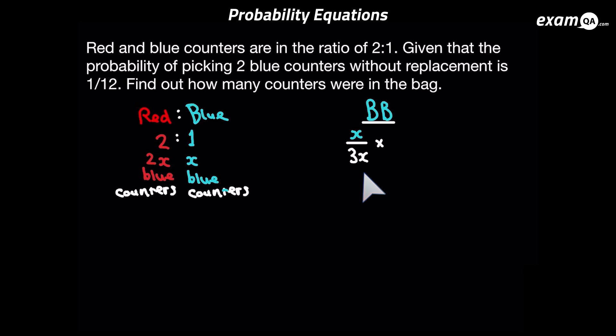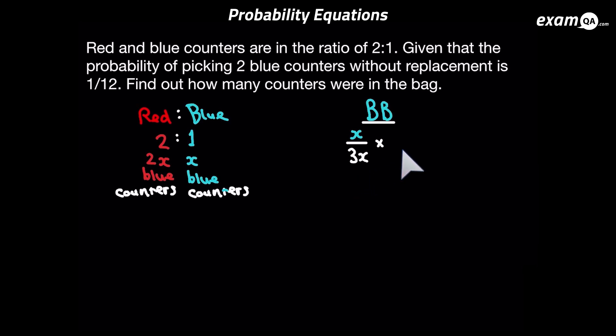Now we're going to pick another blue counter. You might say that from the ratio we can get this, because x over 3x is simply one third and from the ratio you can just get one third. But the next fraction we make when picking the second blue counter is only possible if we've done it this way, so you must do it this way.